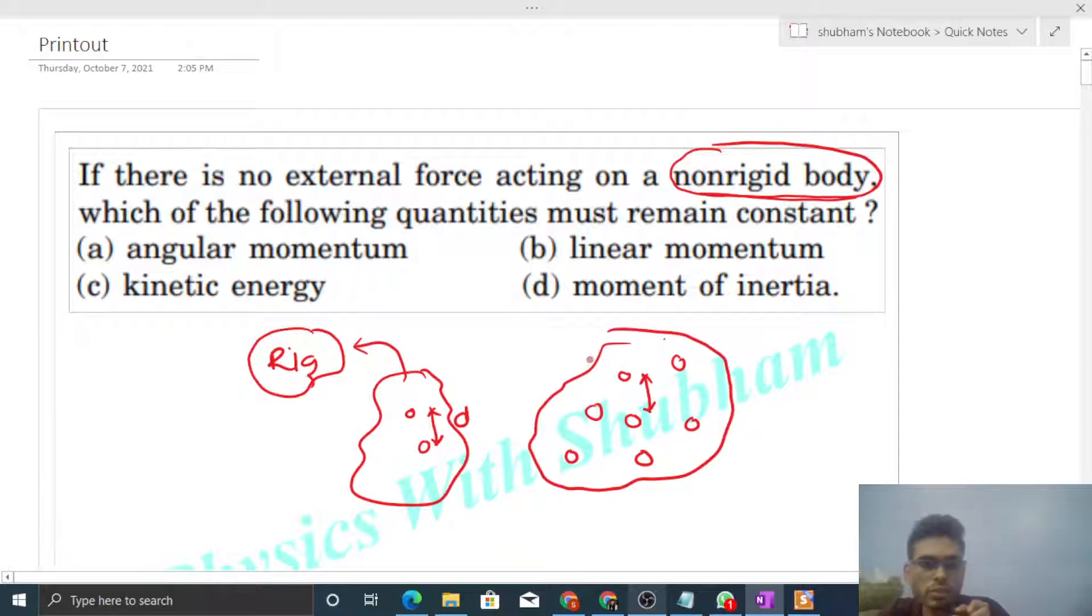So if the net external force on a system is zero, then its linear momentum cannot change. That is conservation of linear momentum. So option B is directly showing conservation of linear momentum.